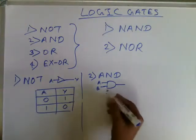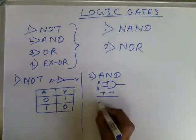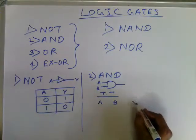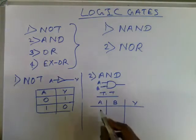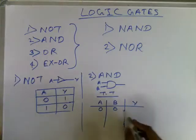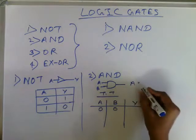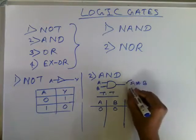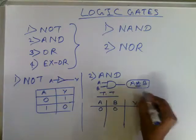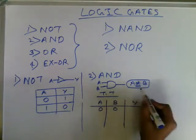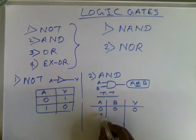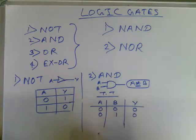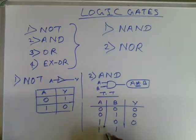The truth table of AND gate: A and B are inputs, Y is the output. The operation is like multiplication — A times B. Input 0 0 gives output 0. Input 0 1 gives 0. Input 1 0 gives 0. Input 1 1 gives 1.